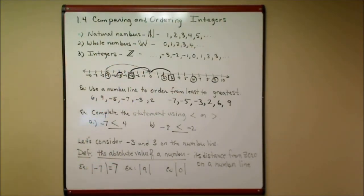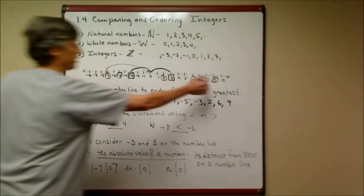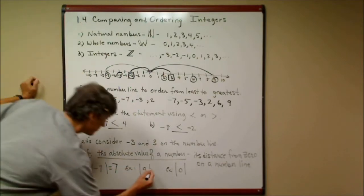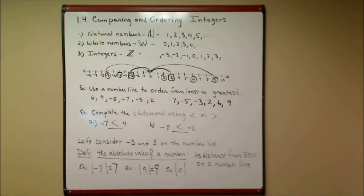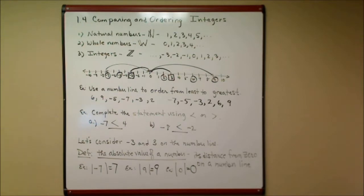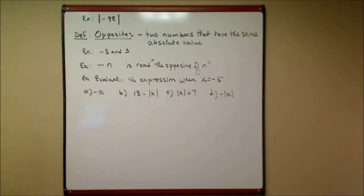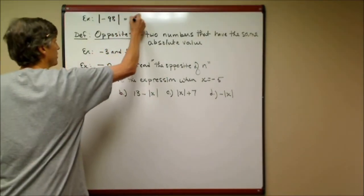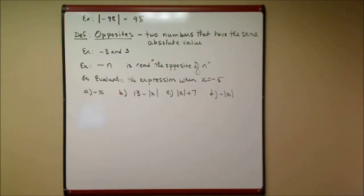The absolute value of negative seven is how far negative seven is from zero — that's seven units, so it equals seven. The absolute value of nine is nine, since nine is nine units from zero. The absolute value of zero is zero, since zero is right at zero. For the absolute value of negative 98 — we don't need to draw a number line that goes to negative 98; we know it's 98 units to the left of zero, so the absolute value is 98.